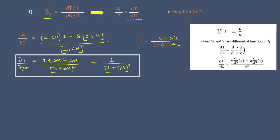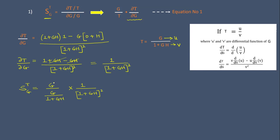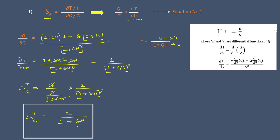So the value of ∂T/∂G equals 1 upon (1 plus GH)². Substituting back into equation one: sensitivity equals G upon T, where T equals G/(1+GH), multiplied by 1/(1+GH)². After cancellation, the final formula for the sensitivity of transfer function T with respect to forward gain G is 1 upon 1 plus GH.